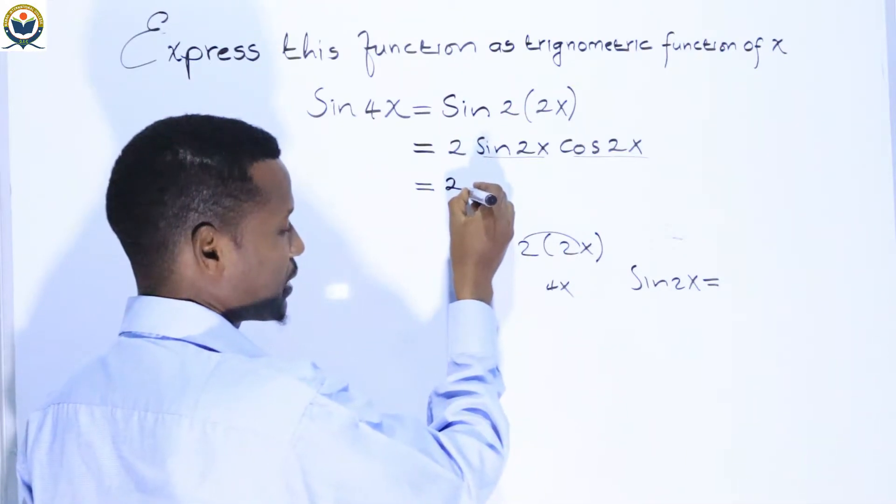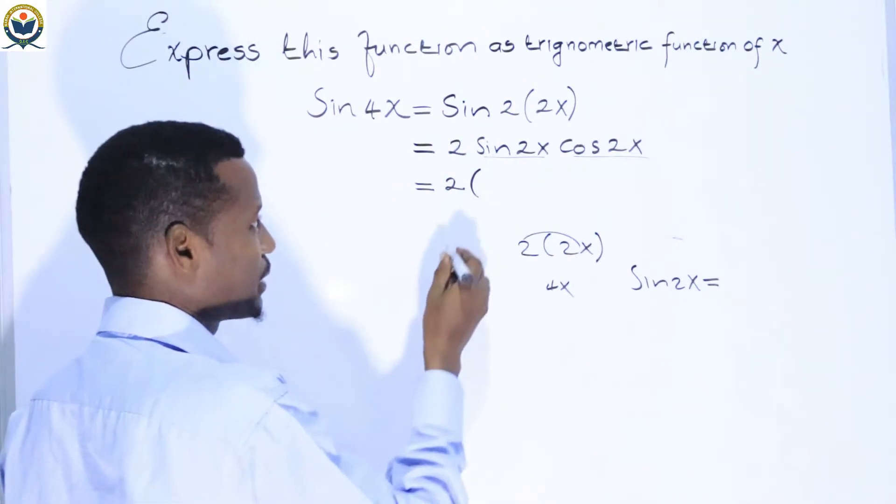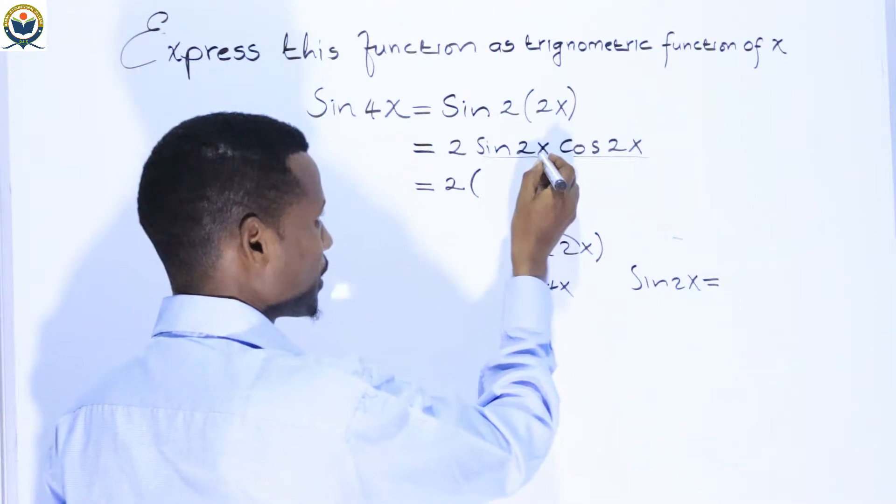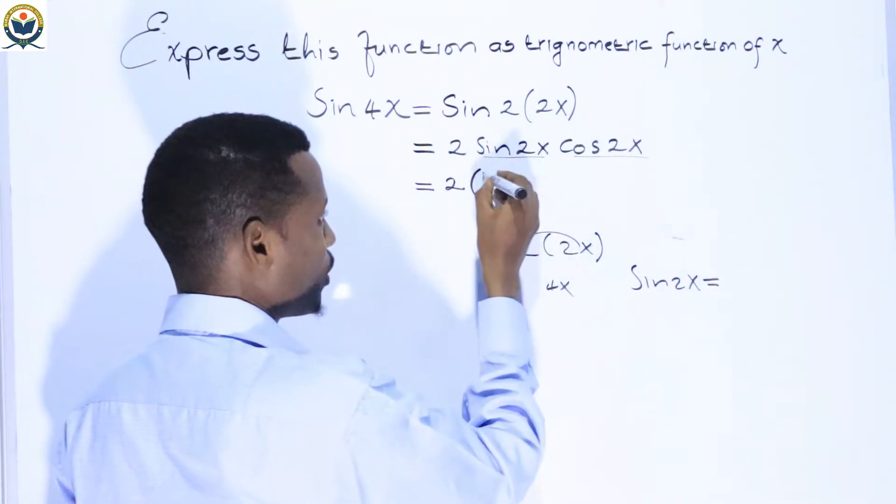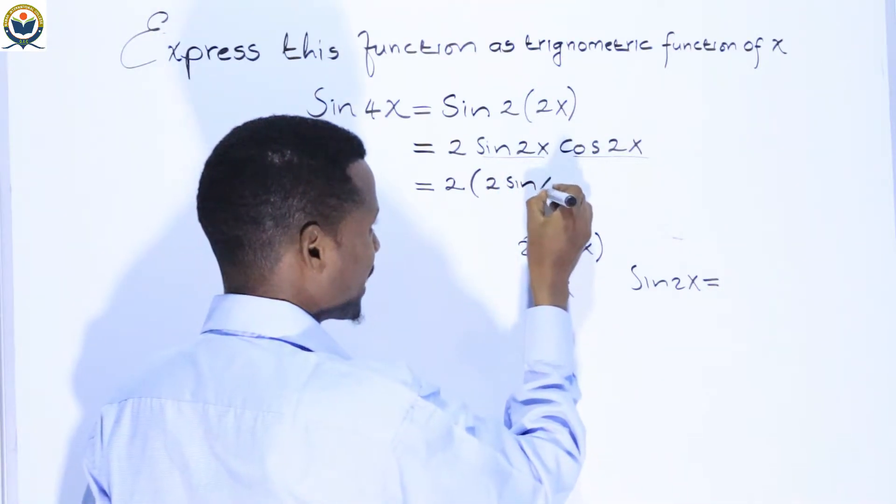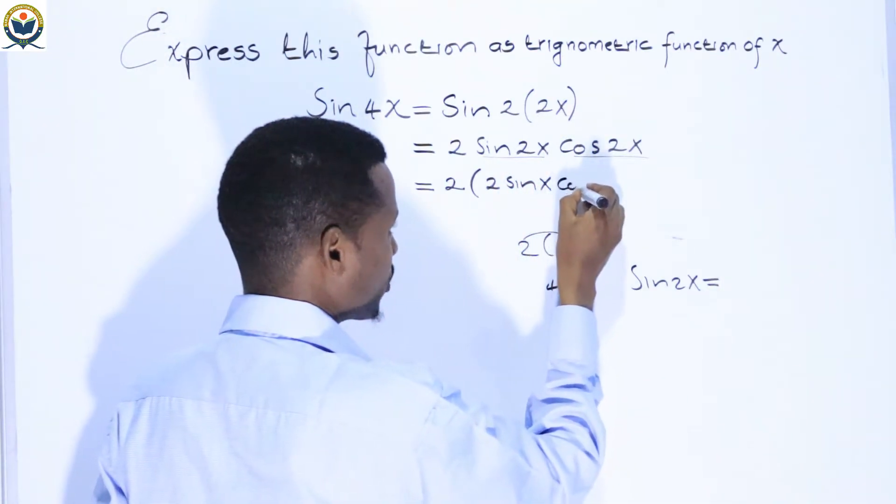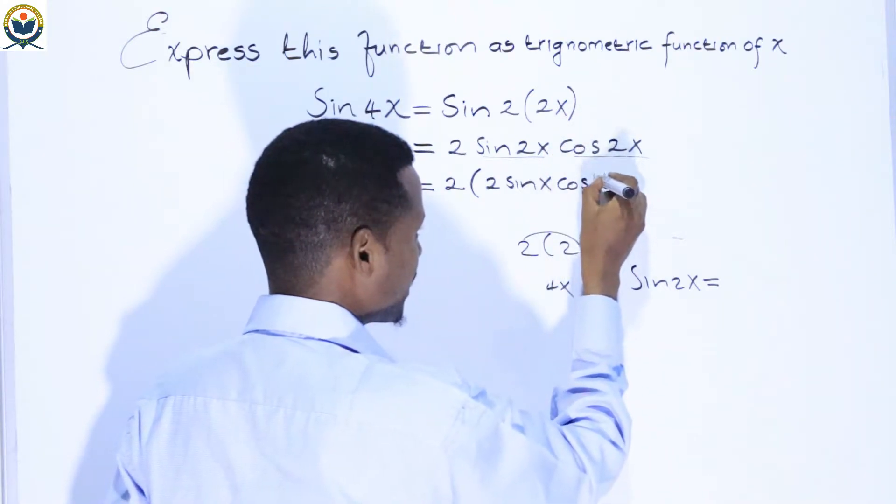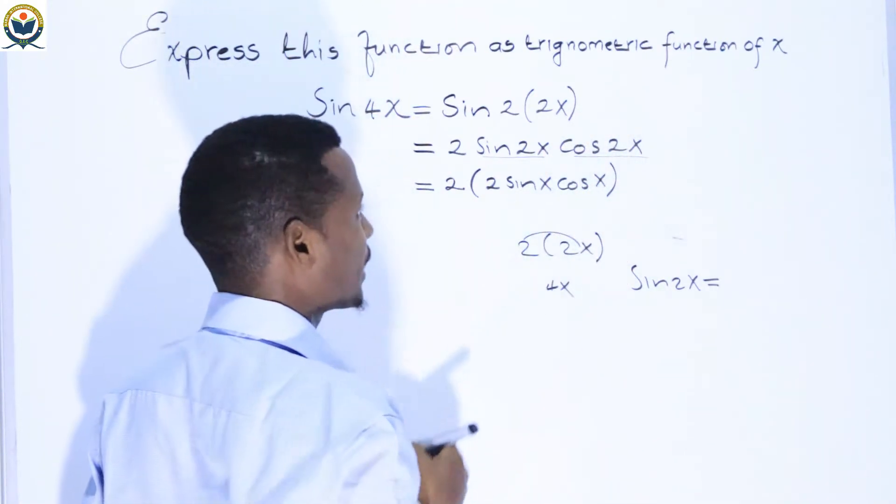The coefficient is 2, so we have: open bracket sin(2x) - sin of double angle formula gives us 2 sin(x) cos(x) - close bracket.